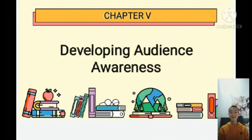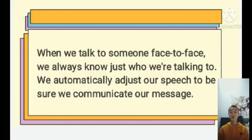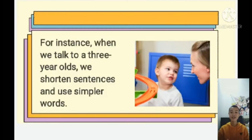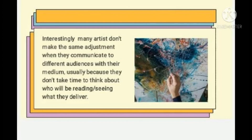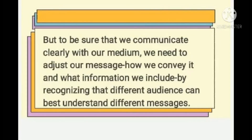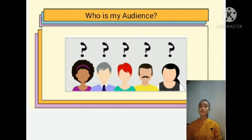Developing audience awareness: when we talk to someone face to face, we always know just who we're talking to, and we automatically adjust our speech to communicate our message. For instance, when we talk to a three-year-old, we shorten sentences and use simpler words; when we talk to college professors, we use longer sentences and more formal language. Many people don't make the same adjustments when communicating to different audiences through media, usually because they don't take time to think about who will be reading or seeing what they deliver.